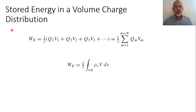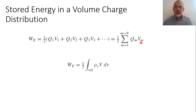We consider stored energy in a volume charge distribution. We have already proved that the stored energy in a system of discrete charges equals half the summation of the value of these charges multiplied by the absolute potential at each charge. Assuming that these charges are not discrete but consist of a volume distribution, instead of Q, we replace Q by the volume charge density ρV multiplied by dV and replace the summation by integration over the volume.